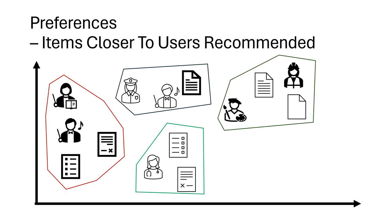Once we have this mapping to a common vector space, the items which are closer in such a vector space to a user can be recommended.